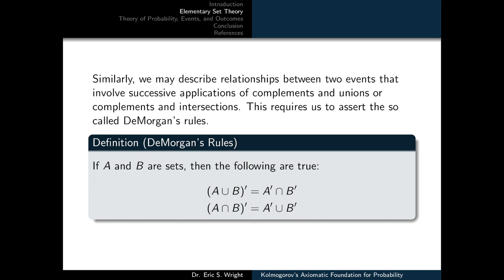We can also describe relationships between two events involving successive applications of complements and unions or complements and intersections. This requires De Morgan's rules, which state: the complement of A ∪ B equals A complement ∩ B complement, and the complement of A ∩ B equals A complement ∪ B complement.